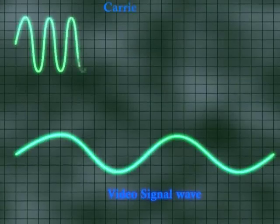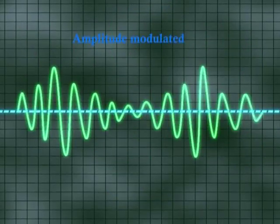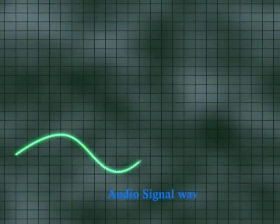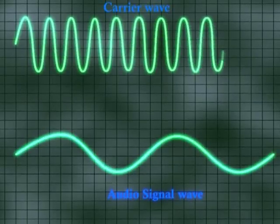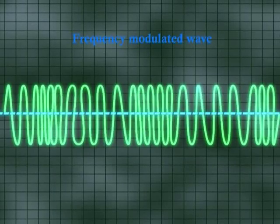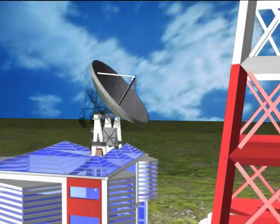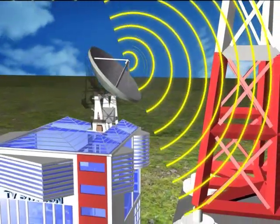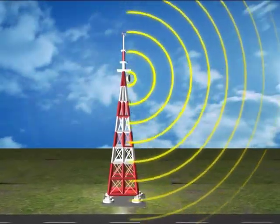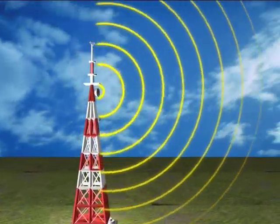The amplified video signals are amplitude modulated using a suitable radio frequency carrier wave in a transmitter called the AM picture transmitter. The amplified audio signals are frequency modulated using another radio frequency carrier wave of a higher frequency in a transmitter called the FM sound transmitter. The video and audio modulated carrier waves together are fed into the transmitting antenna on a tower, which broadcasts the combined signals by radiating them into space.